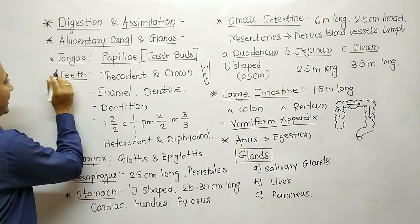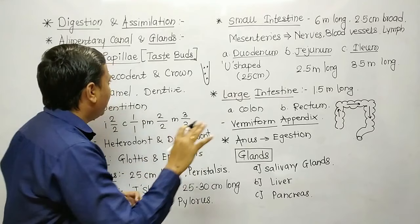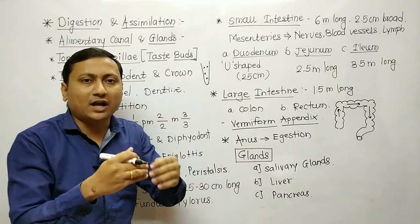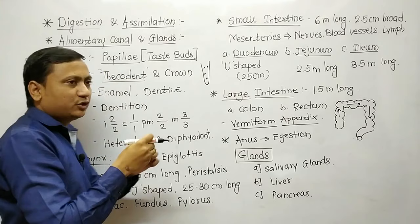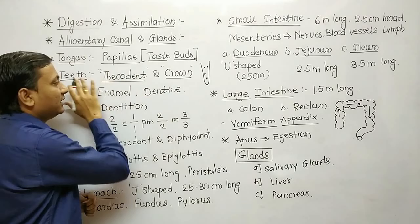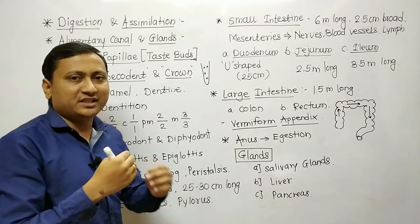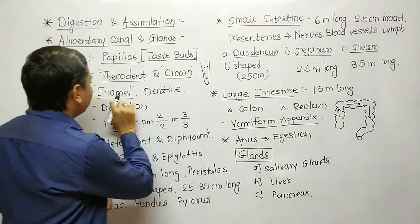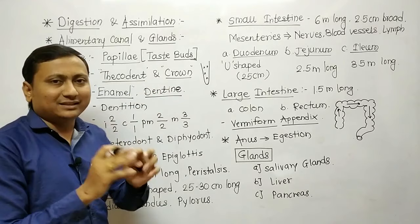Teeth are important for mastication of food. The portion of teeth which is embedded in the gums is called the root of teeth, known as thecodont. The visible part of the tooth is known as the crown. The crown is covered by a hard substance known as enamel. Enamel is the hardest substance of the body. The body of the tooth is known as dentine.